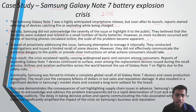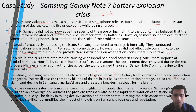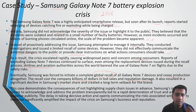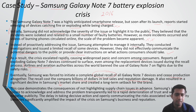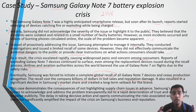Eventually Samsung was forced to initiate a complete global recall and stop production altogether. The recall cost the company billions of dollars in lost sales, and it also resulted in a significant loss of reputation, a significant decline in Samsung's market share, and a long-term setback for the brand. This case study demonstrates that when we don't highlight issues in advance to the supply chain, tackling them at a later stage becomes very difficult.